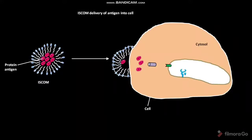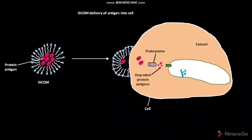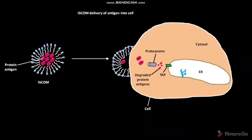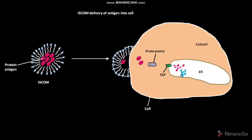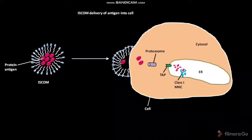In the cytosol, proteasomes are present. The protein antigens go through the proteasome and produce degraded protein antigens. The ER of the cell has TAP, or transporter associated with antigen processing. The degraded protein antigens are then transported through TAP into the ER lumen. The ER membrane has class 1 MHC molecules. The degraded protein antigens then bind to the class 1 MHC molecules.